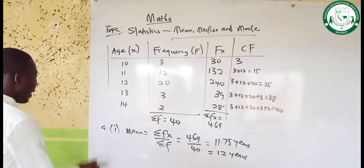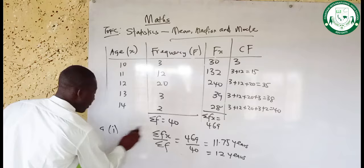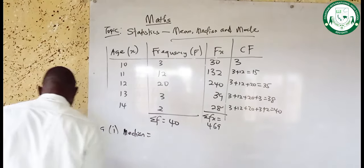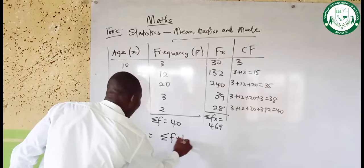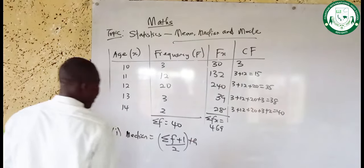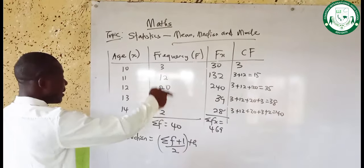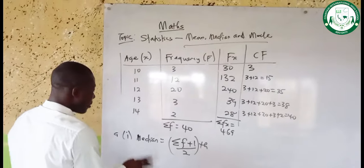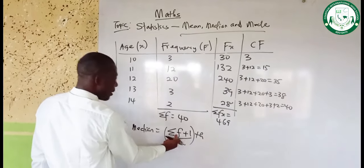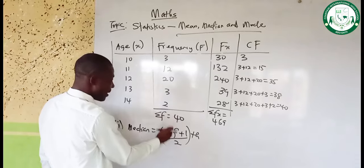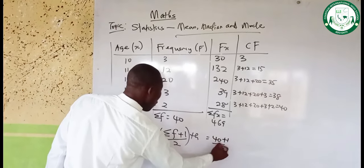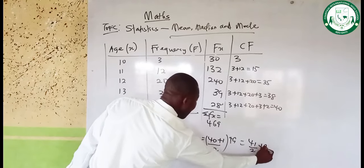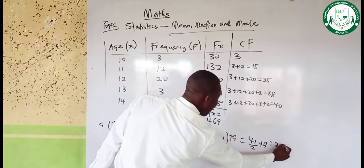Now let's find the median. For grouped data, we have the formula for the median: the median is the (ΣF + 1) / 2 th value. Our summation F is 40, so we compute (40 + 1) / 2 = 41 / 2 = 20.5th value. So the median corresponds to the 20.5th value.